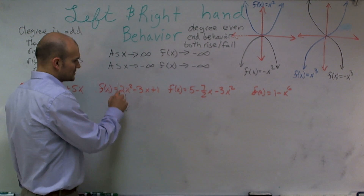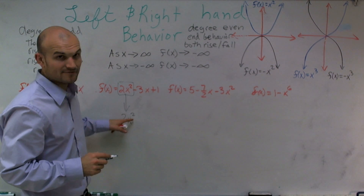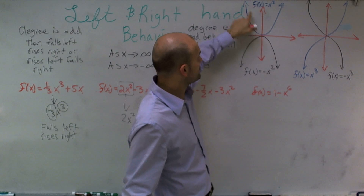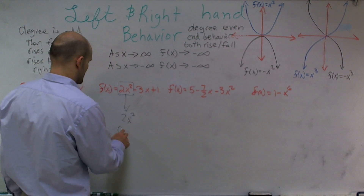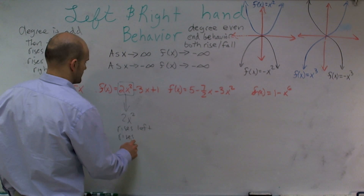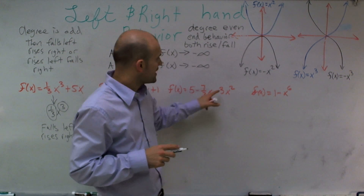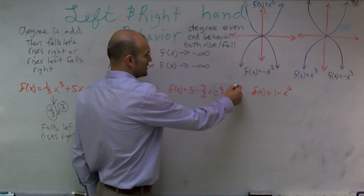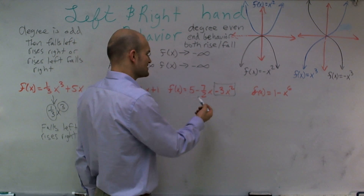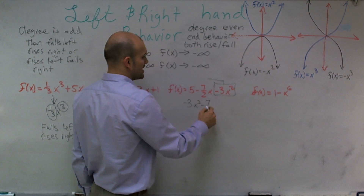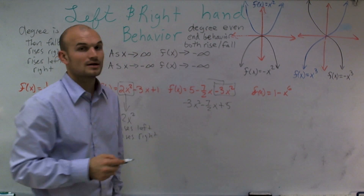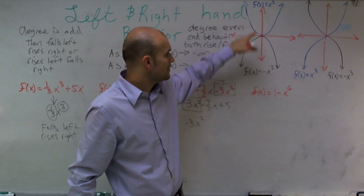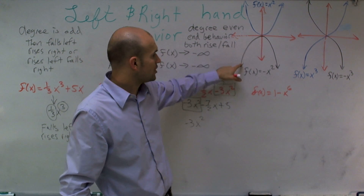The next one has a leading term of 2x squared. The degree is even and the leading coefficient is positive, so the function rises left and rises right. For the third problem, the terms are not in descending order. Rewritten correctly, it's 3x squared minus 7½x plus 5, making negative 3x squared the leading term. It's an even degree but the leading coefficient is negative, therefore the end behavior falls left and falls right.